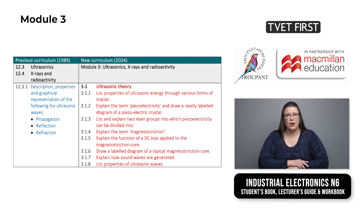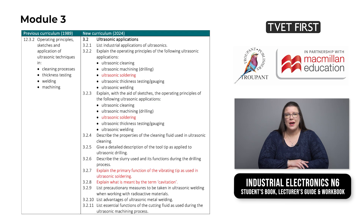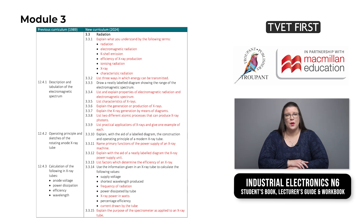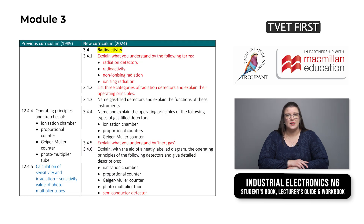Module 3, called Ultrasonics, X-rays and Radioactivity, combines the old sections 12.3 on ultrasonics and 12.4 on X-rays and radioactivity. The old section 12.3.1 has been left out of the new curriculum. There are 8 learning outcomes on ultrasonic theory and 11 on ultrasonic applications. Most of the section on radiation is new and it has 15 learning outcomes. Radioactivity is covered in more detail in section 3.4. The curriculum now distinguishes between ultrasonic welding and ultrasonic soldering. New concepts such as piezoelectricity, magnetostriction and radiation detectors are introduced.